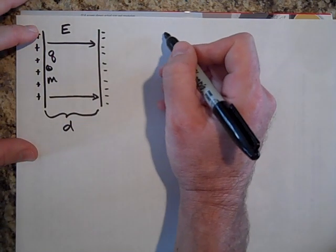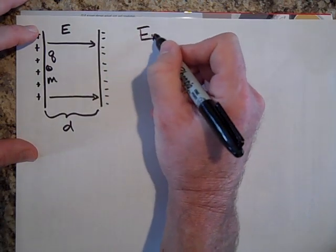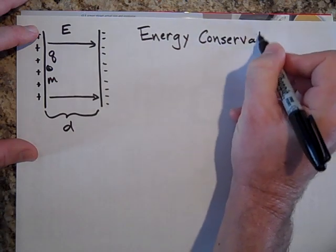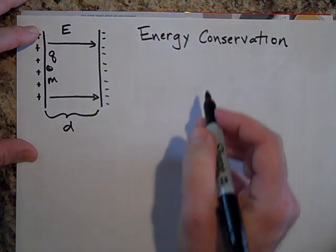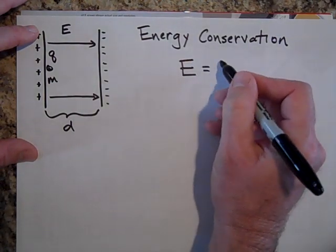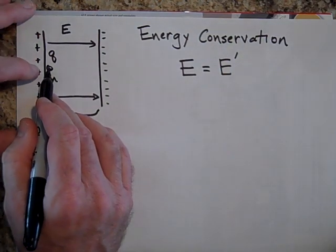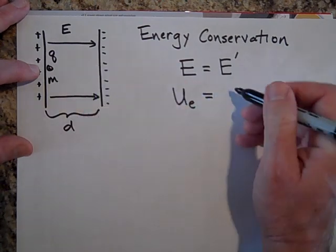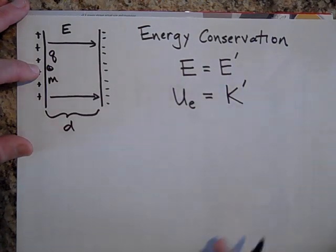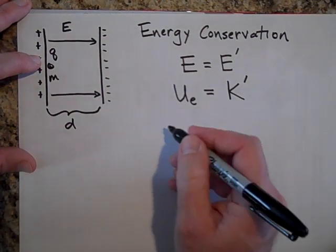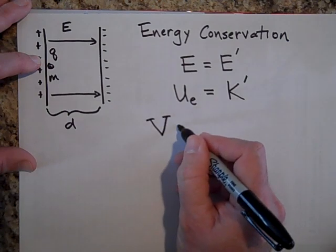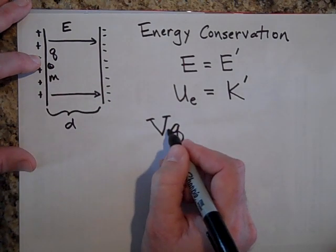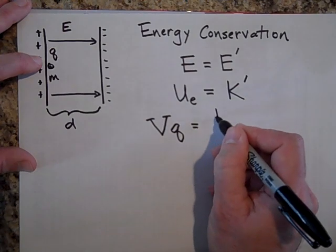Okay. This time I'm going to say E equals E prime. This is with energy conservation now. And I'm going to say E equals E prime. Okay. Over here, it's got all potential energy. And then when it gets to here, that all gets turned into kinetic energy. The potential energy is going to be VQ, the voltage difference between these plates V times Q. That's the energy. That's equal to one half MV squared.